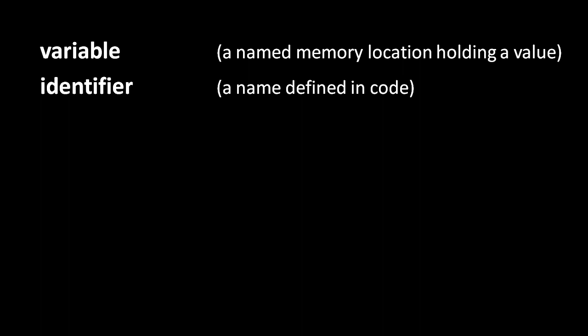The jargon term for a name in source code, such as the name of a variable, is identifier. Unlike in mathematics, it's generally considered bad practice to overly use single-letter variable names in programming.